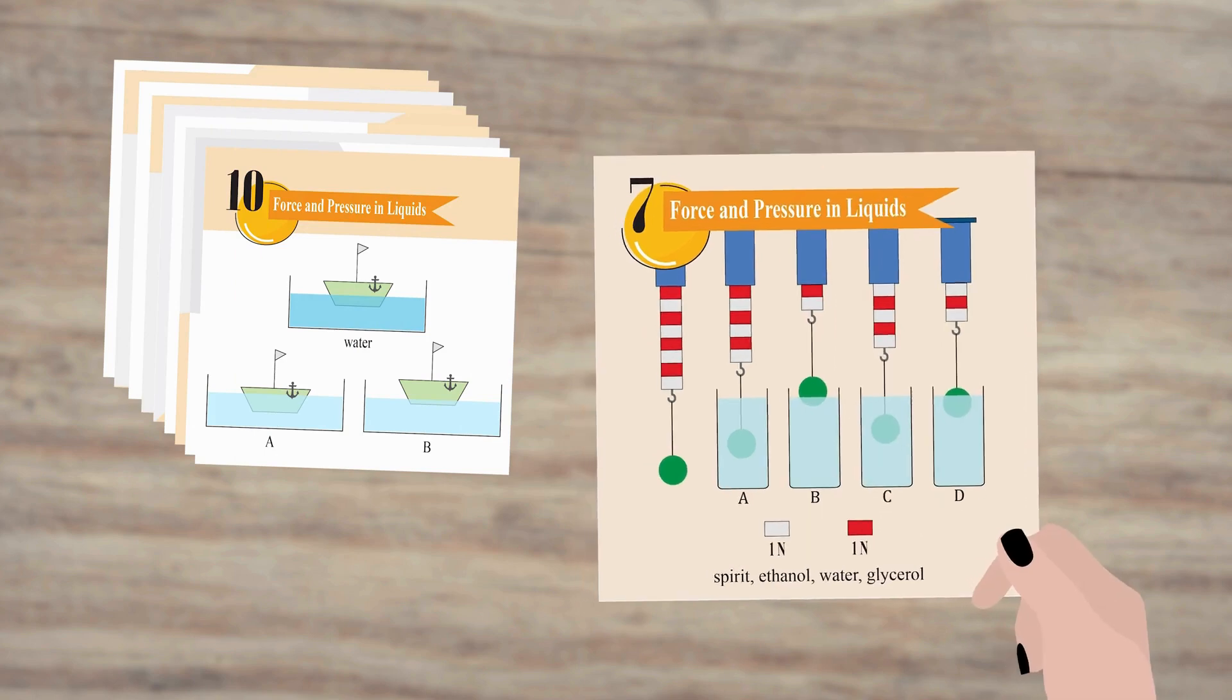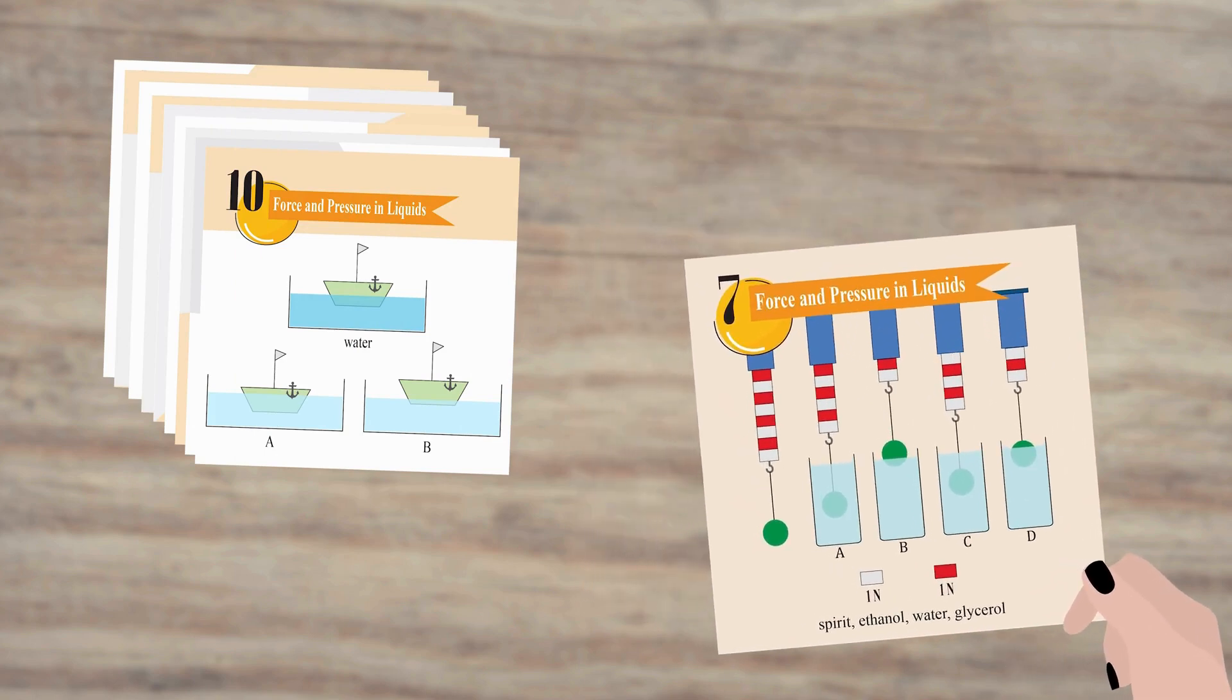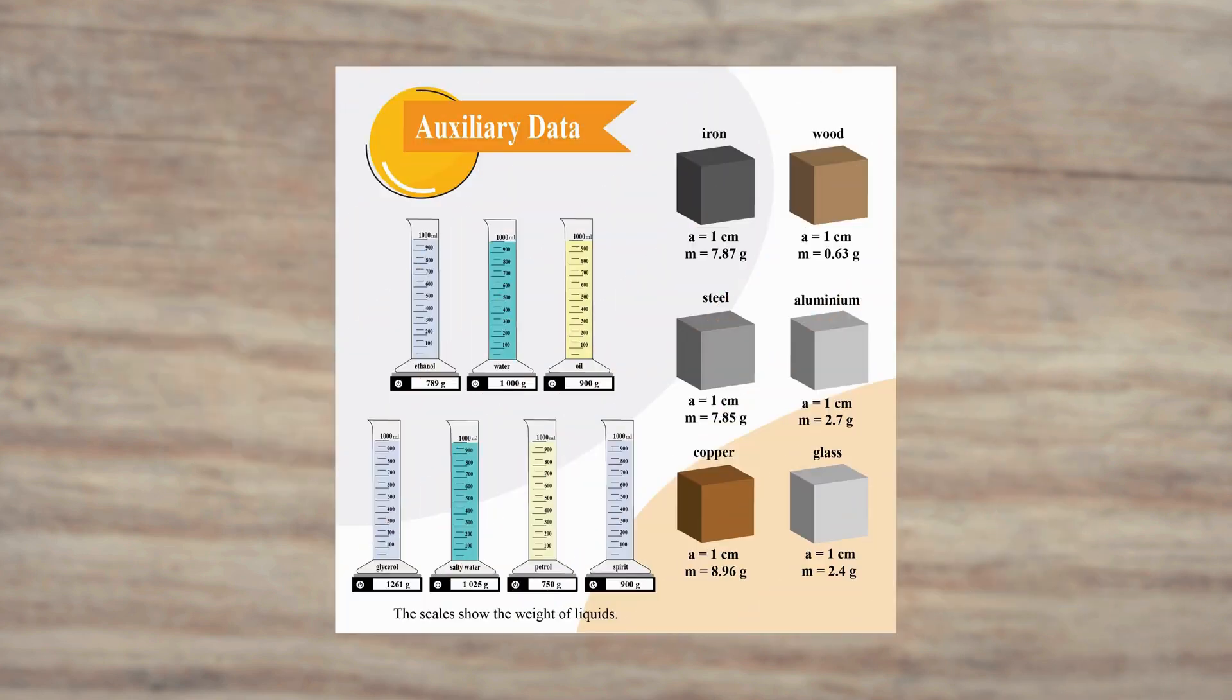If the player is right, he keeps the card. If the player fails to answer the question or is not able to explain the answer enough, the card goes back to the pack. Players can use auxiliary data cards during the game.